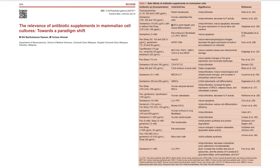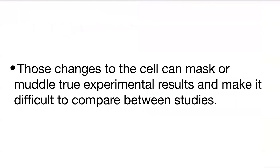Basically there are a lot of things that can happen to your cells even though antibiotics target bacteria — they can have these off-target effects on the cells you're growing. This can mask the true experimental results or make it difficult to compare between studies.